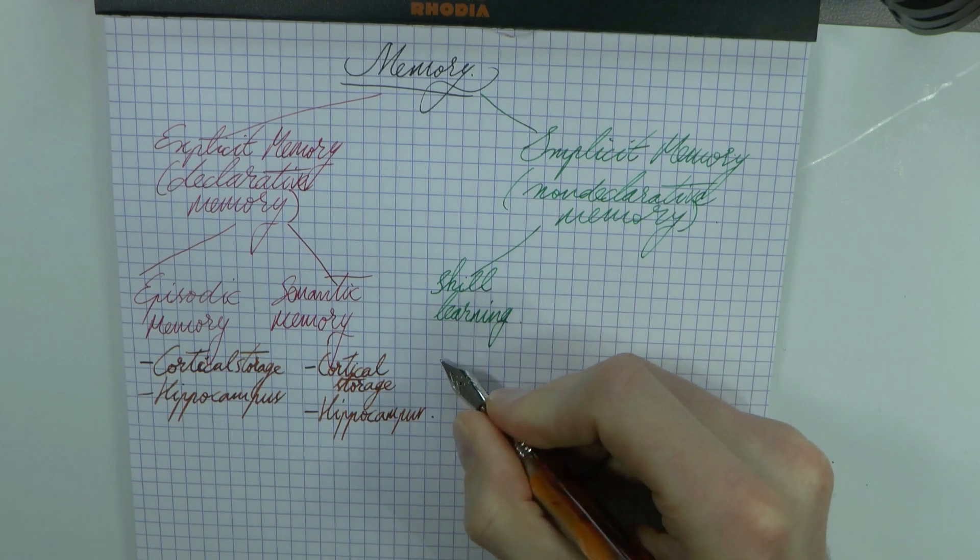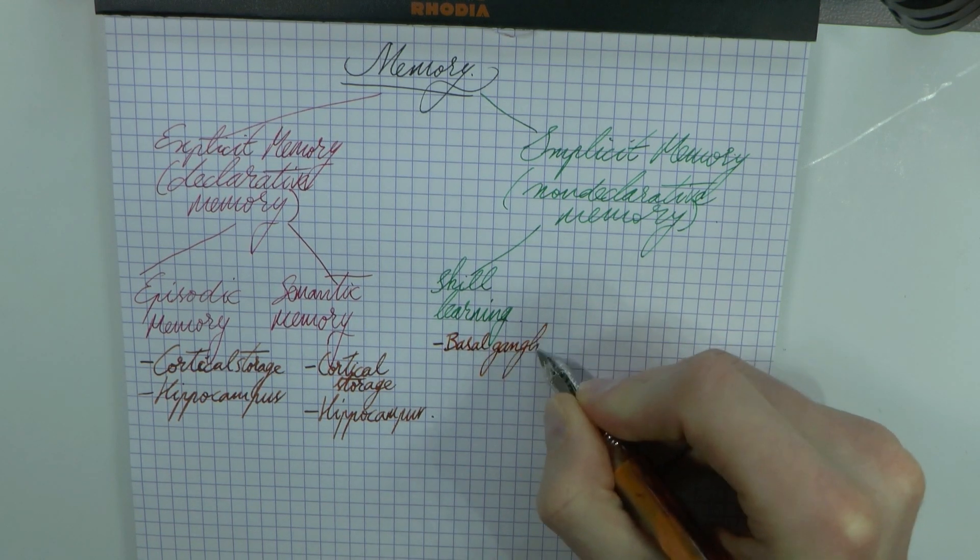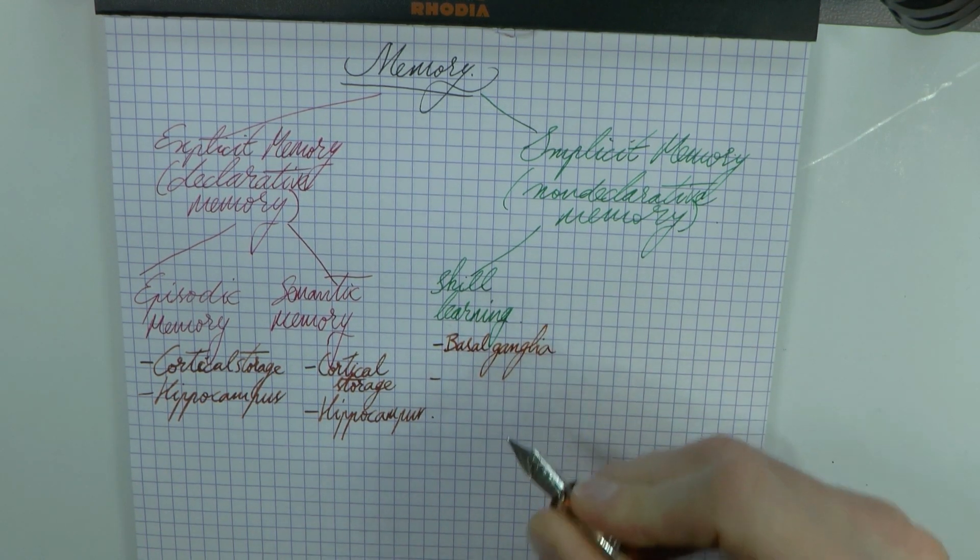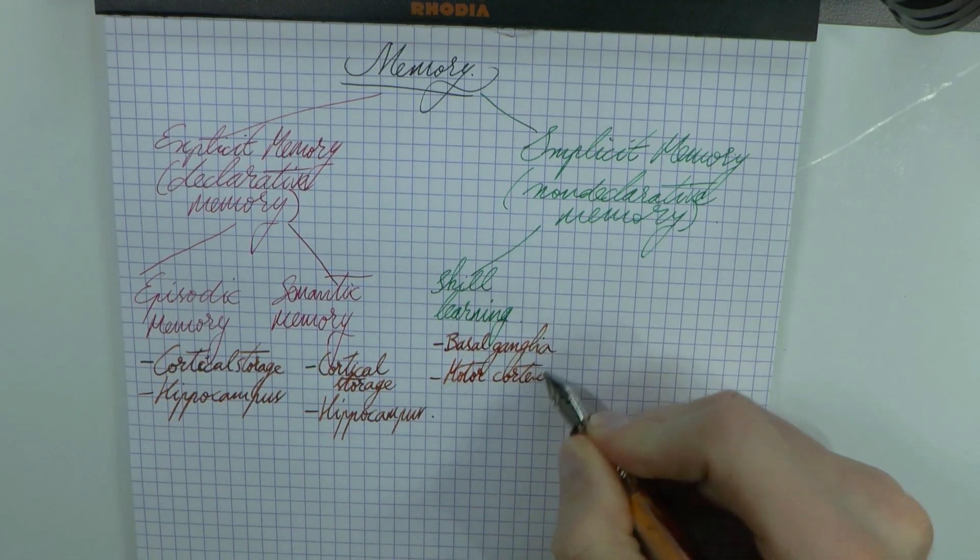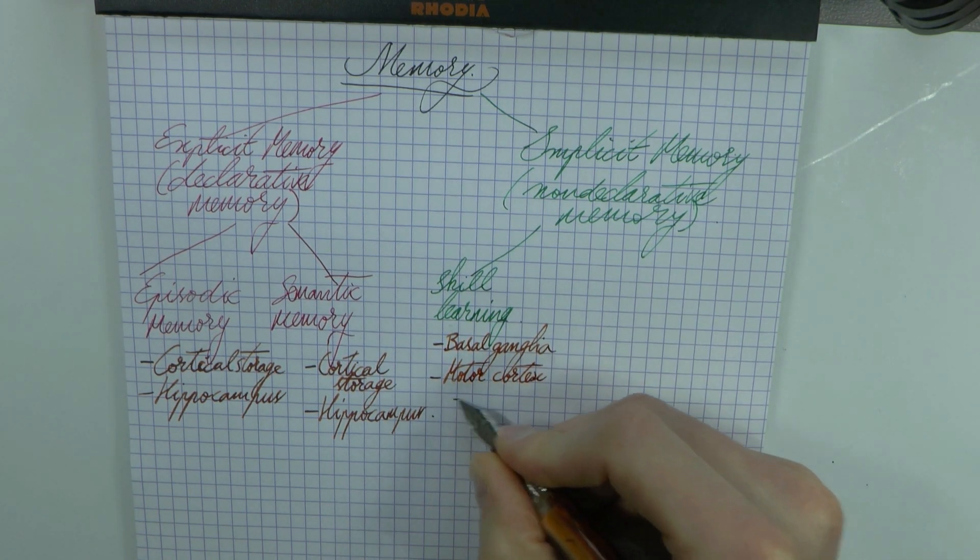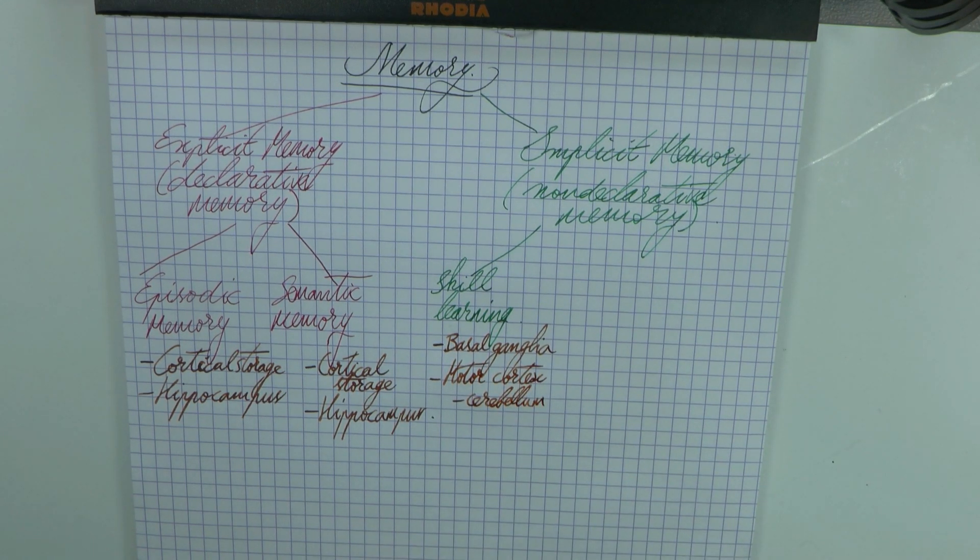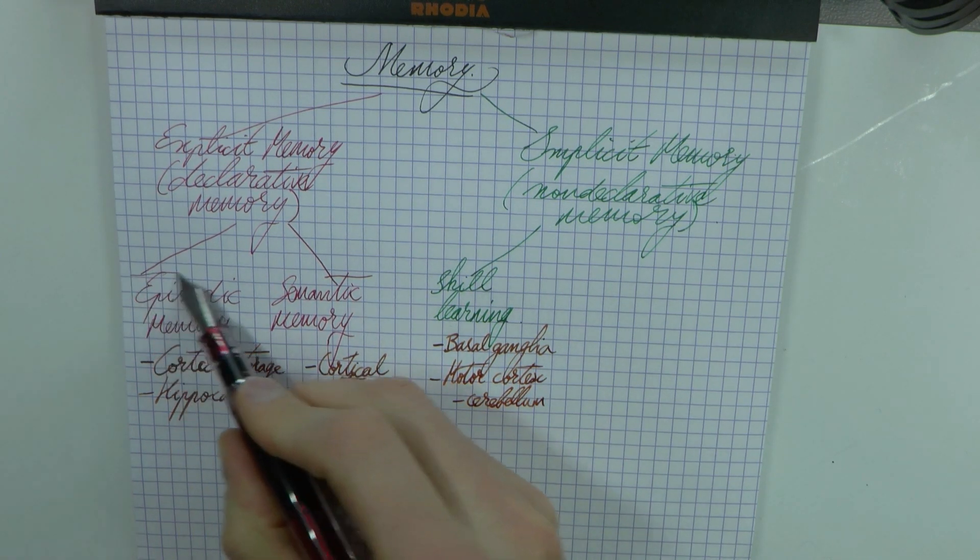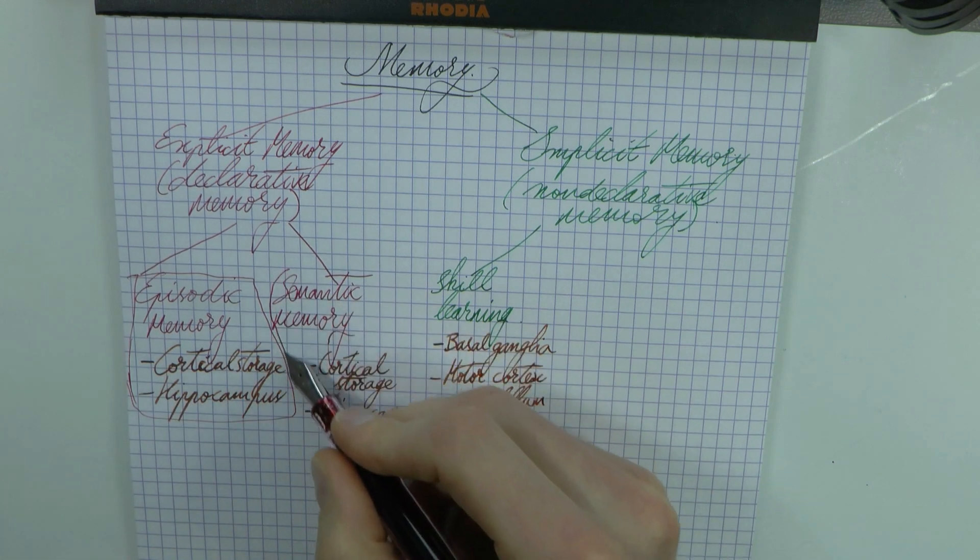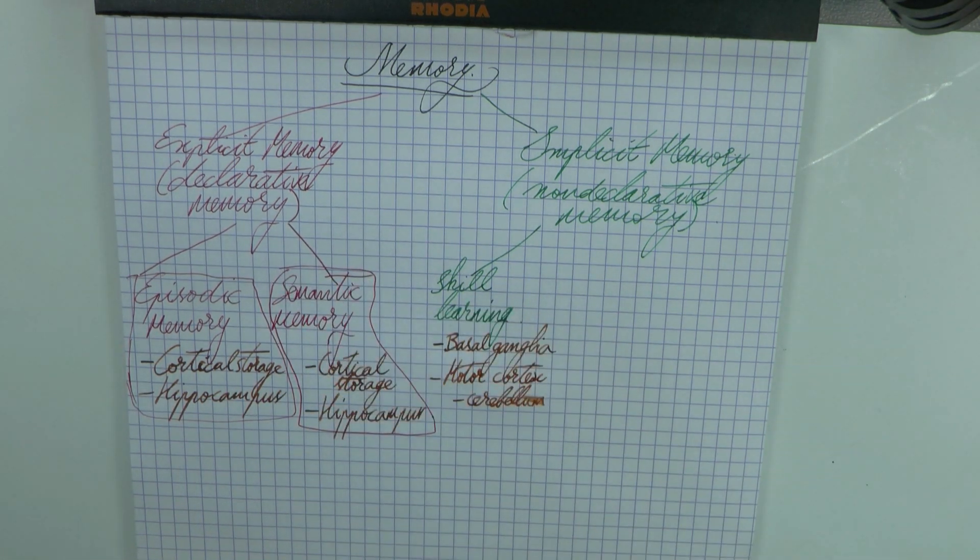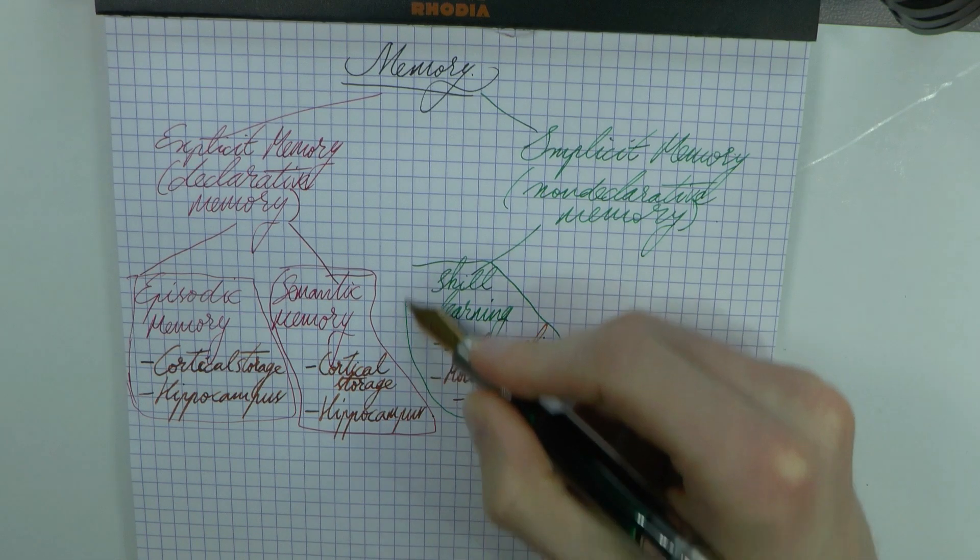What do we know about skill learning in the brain? Well, we know a couple of things. We know that the basal ganglia are involved—these are motor structures. We know that the motor cortex is involved, we know that the cerebellum is involved.